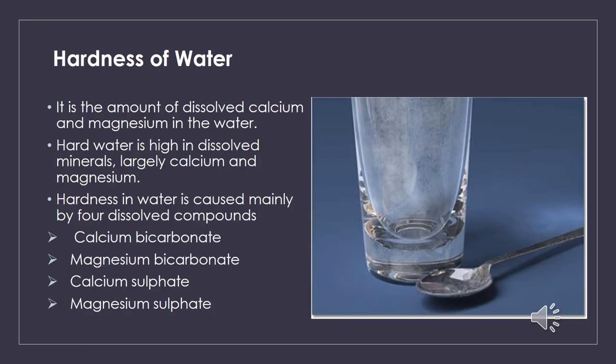Hardness of water is the amount of dissolved calcium and magnesium in water. Hardness may be defined as the soap-destroying power of water. Hard water is high in dissolved minerals, particularly calcium and magnesium. Hardness is mainly due to four dissolved compounds: calcium bicarbonate, magnesium bicarbonate, calcium sulfate, and magnesium sulfate. Hardness is classified as carbonate and non-carbonate. Carbonate hardness (temporary hardness) is due to calcium and magnesium bicarbonate. Non-carbonate hardness (permanent hardness) is due to calcium and magnesium sulfate, chlorides, and nitrates. Drinking water should be moderately hard; softening water is recommended when hardness exceeds 3 milliequivalent per liter (150 mg per liter).